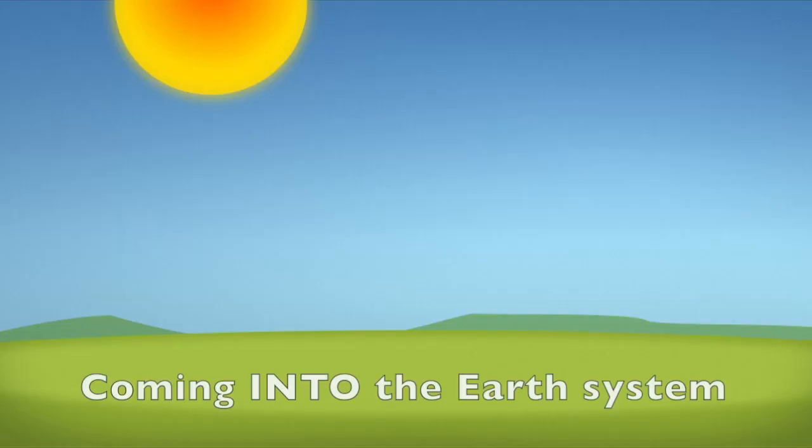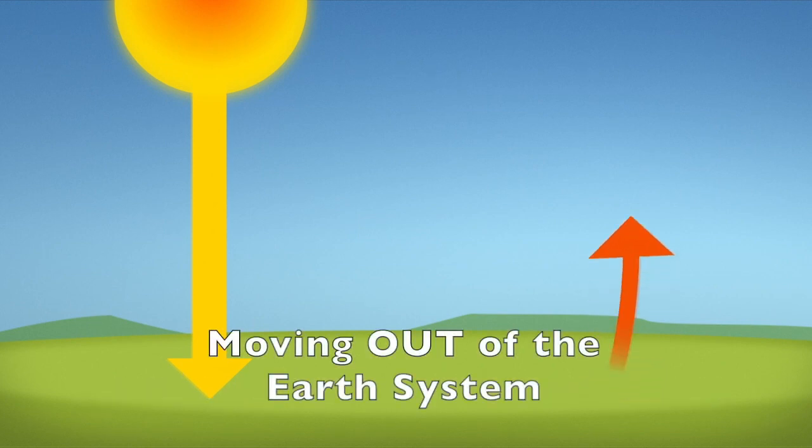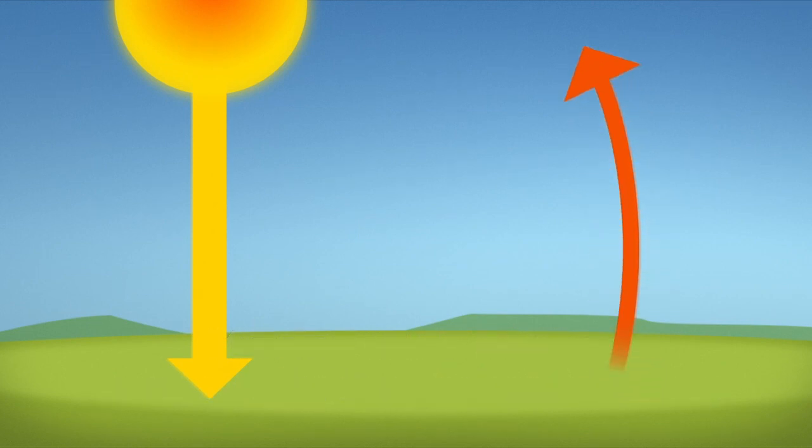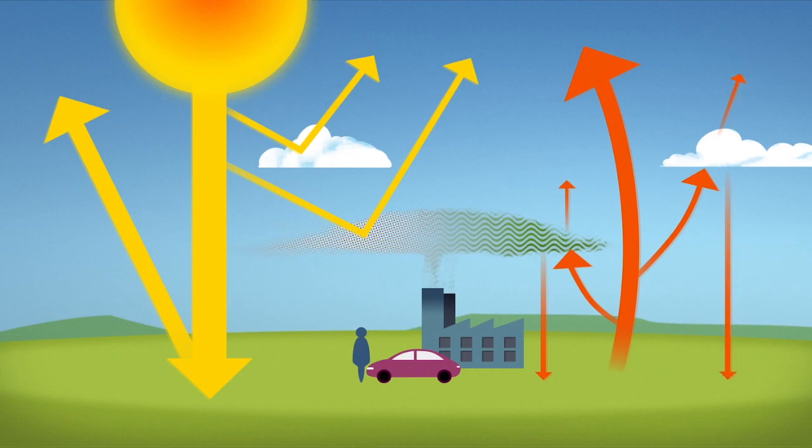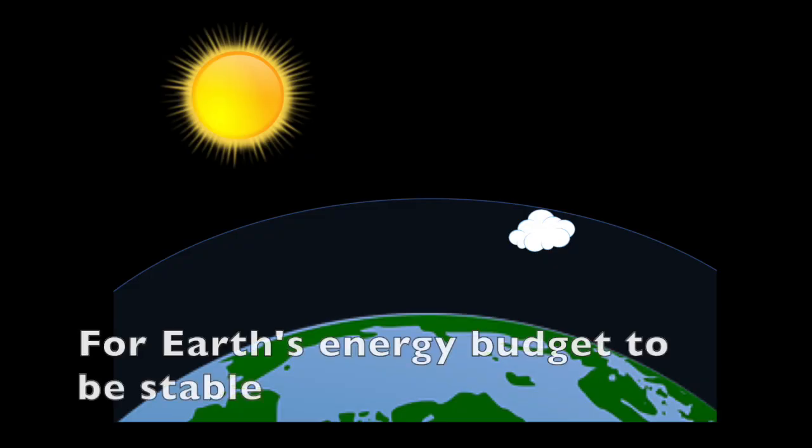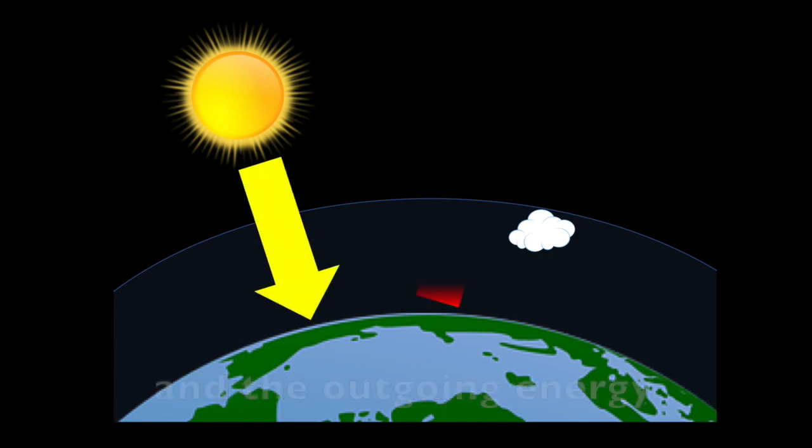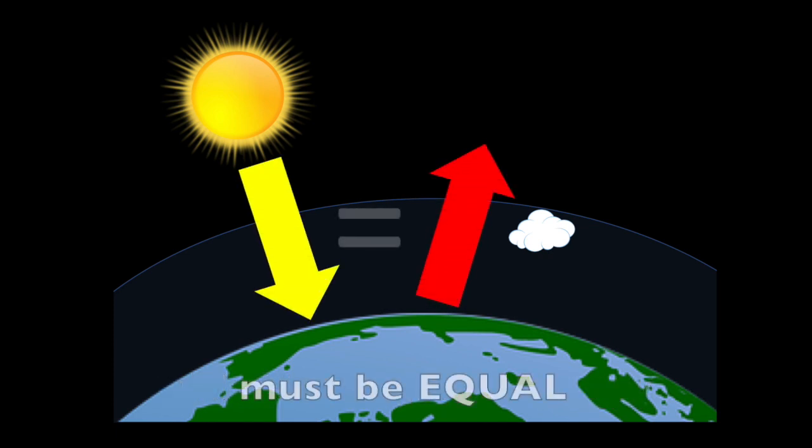Earth's energy budget is the balance between the amount of energy coming into the Earth system and the amount of energy moving out of the Earth system. This energy budget is complicated and there are a lot of things that affect how much energy goes in and how much energy goes out. For Earth's energy budget to be stable, the incoming energy and the outgoing energy must be equal.